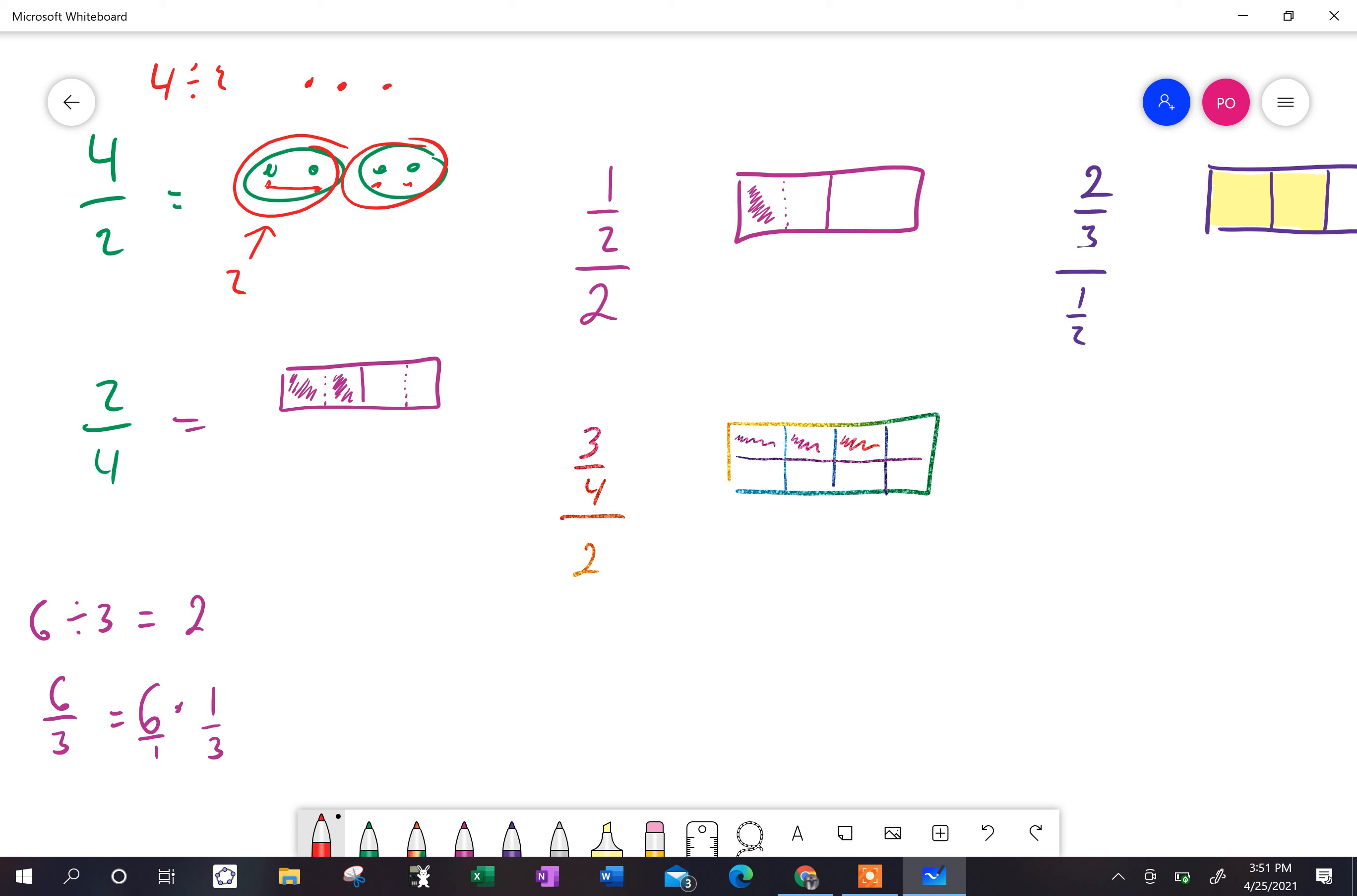So four divided by two is two. So once again, I took four and I divide it into two groups. What is the value of one of those groups? It is two. That's why four divided by two is two.